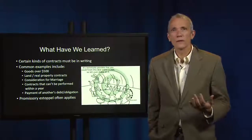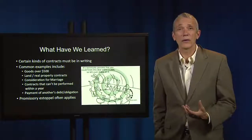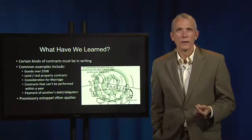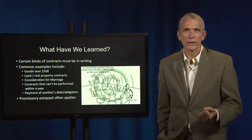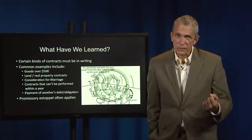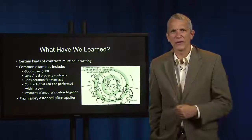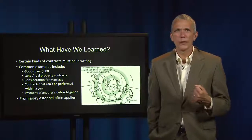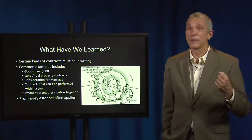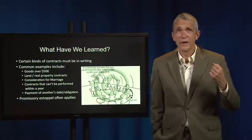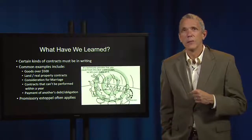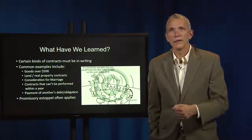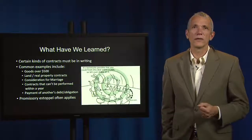So what have we learned? We've learned that certain kinds of contracts must be in writing in order to be enforceable, and that this requirement has deep historic origins. We're familiar with the basic types of contracts that fall within the ambit of the statute of frauds: contracts to buy and sell goods over $500; contracts to buy or sell real property; contracts that cannot be performed within one year; contracts offering something in return for a marriage promise; and agreements to pay another person's debt. But we've also learned that parties often can pursue promissory estoppel theories just as if the agreement in question weren't one to which the statute of frauds applied.